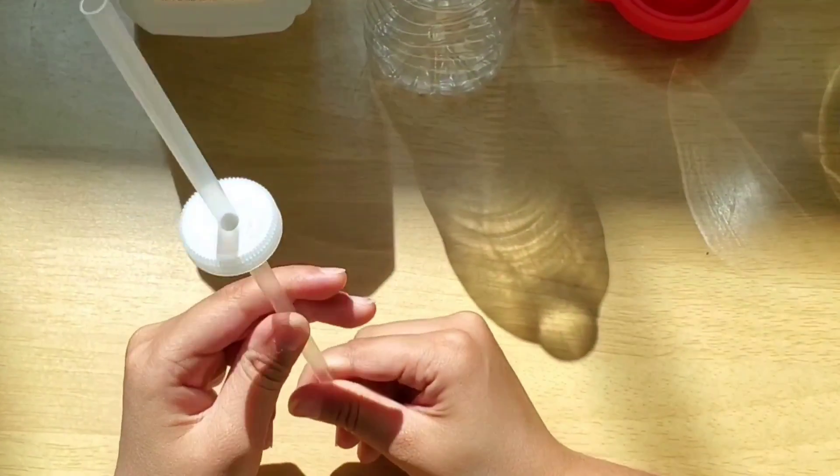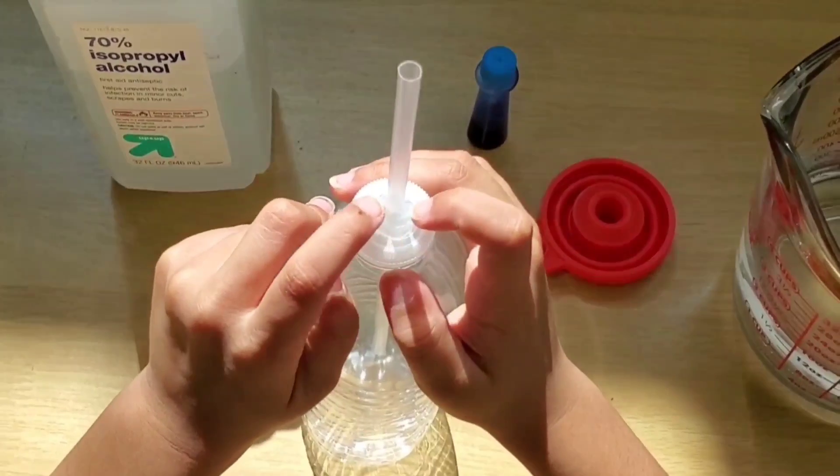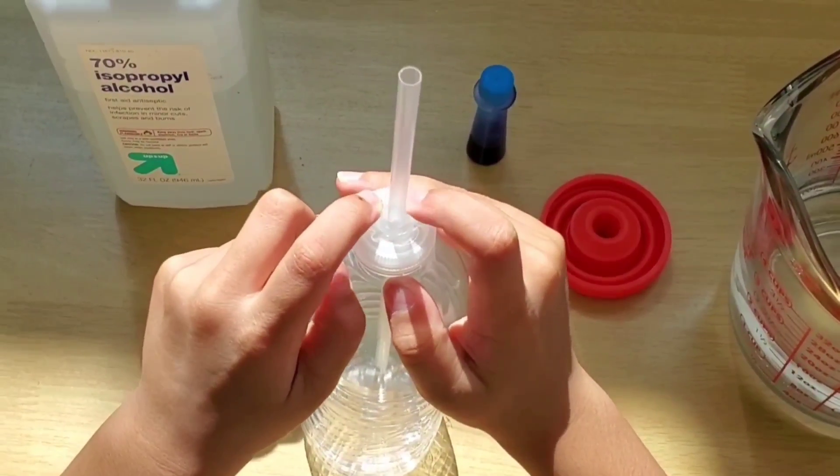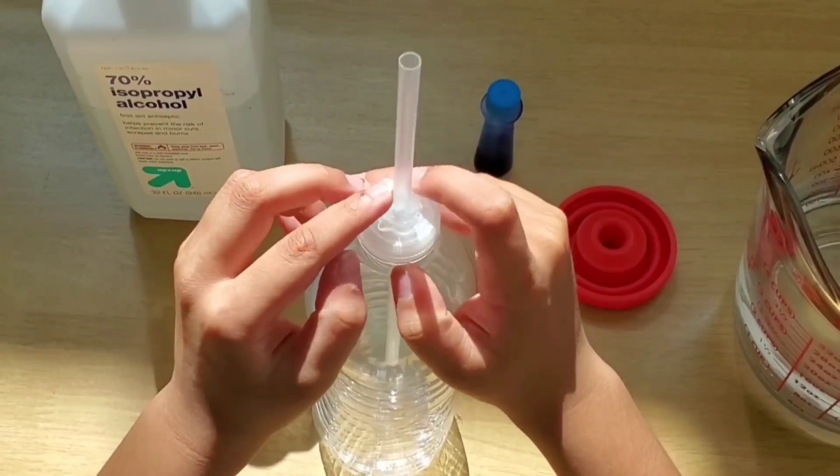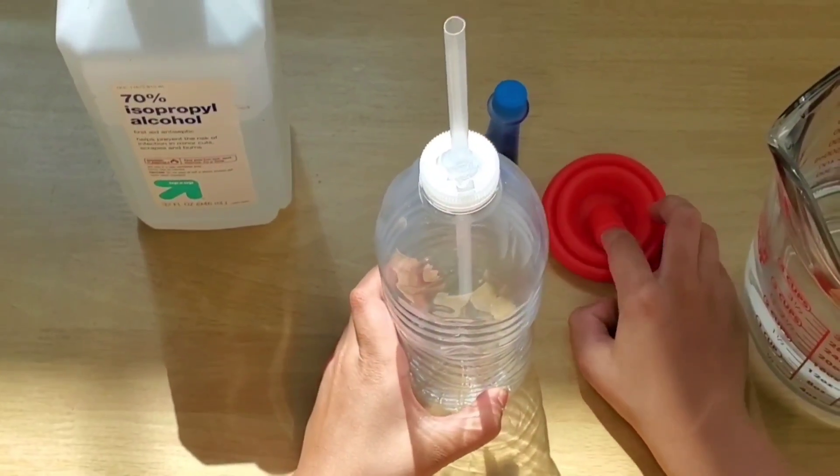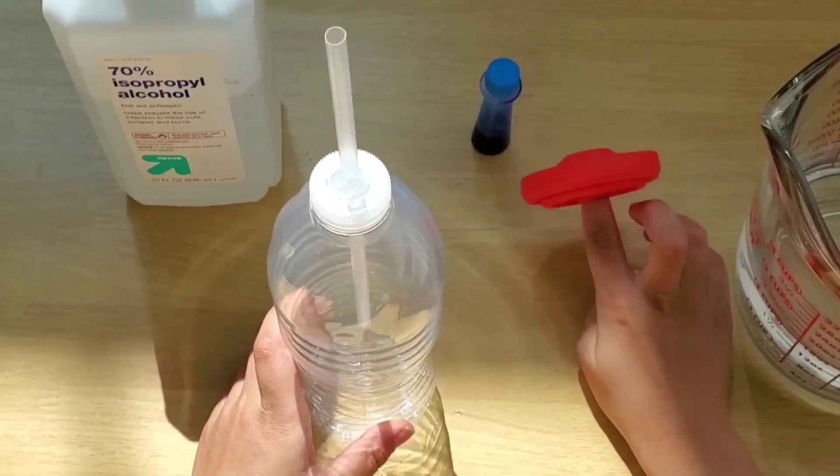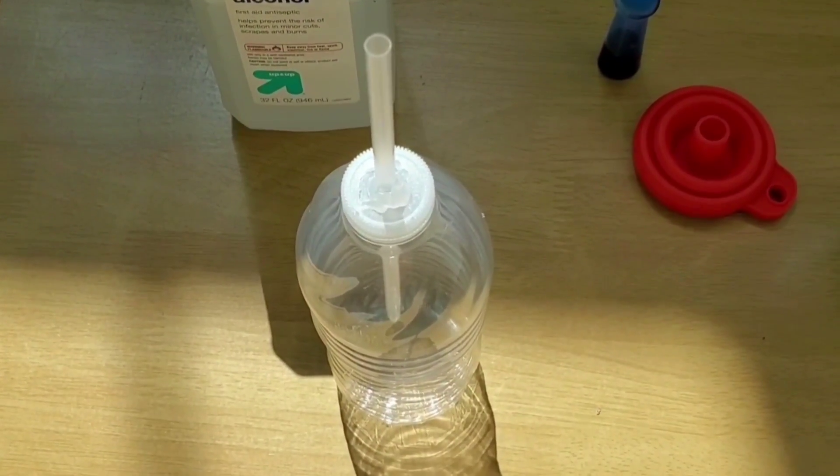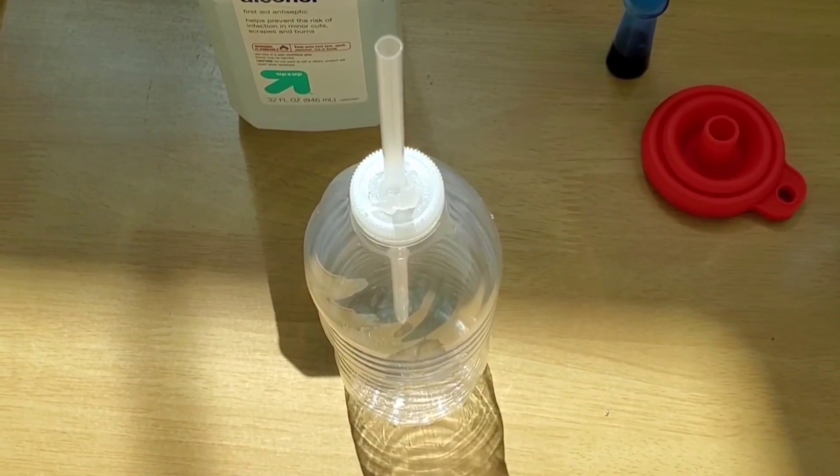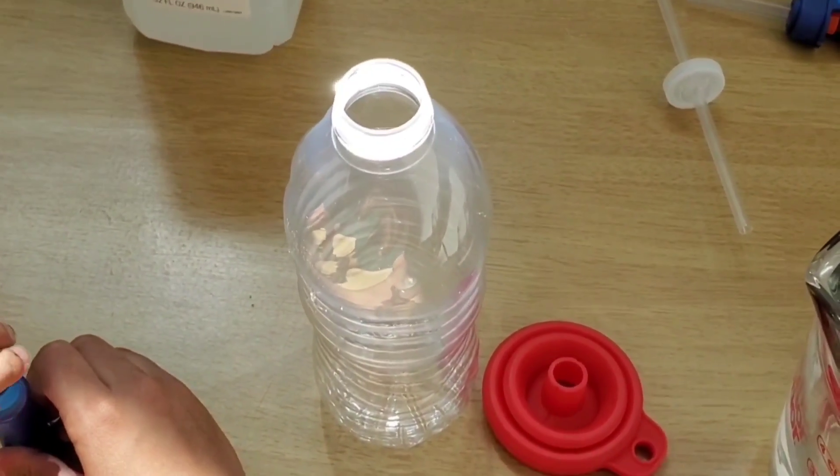Now we have hot glued the straw on the cap and it should be properly sealed. The way that we can test this is by blowing through the straw. When we blow inside it, you should not be able to if it's sealed properly. So now we will put some food color.